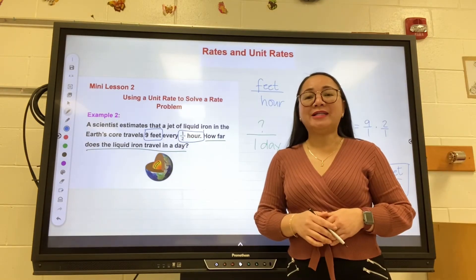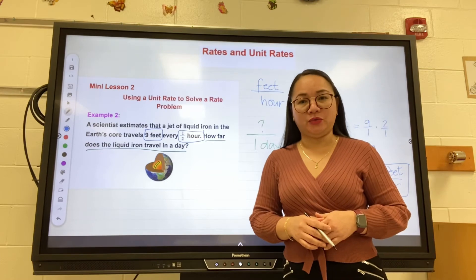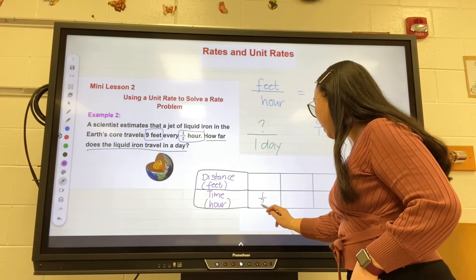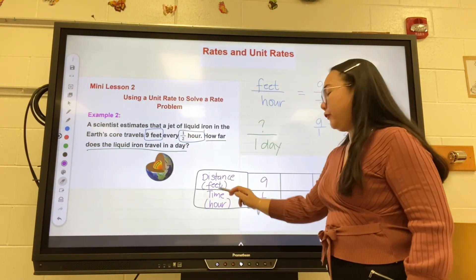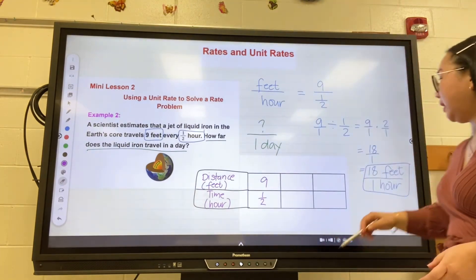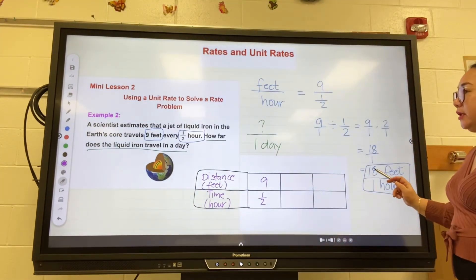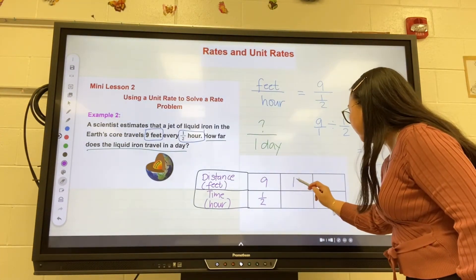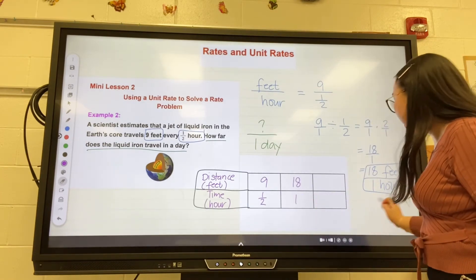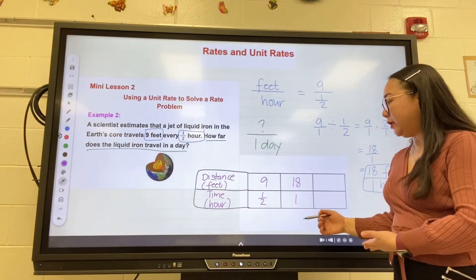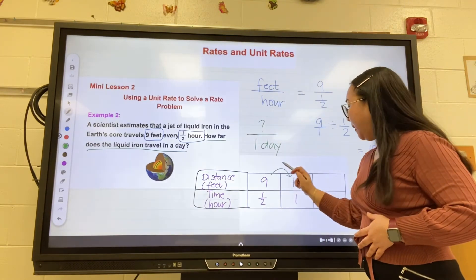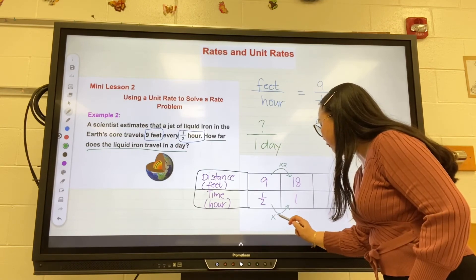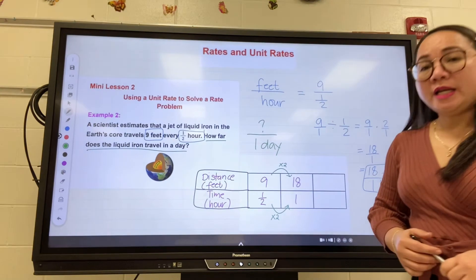So what we're going to do is set up a table of equivalent ratios. Going back to the problem, it says for every one-half hour it travels nine feet. We already solved that for every one hour, the liquid iron travels eighteen feet. Write down eighteen here, and then write down one hour here. To get eighteen, you have to multiply nine by two, and then do the same thing on the bottom side: multiply one-half by two to get one.